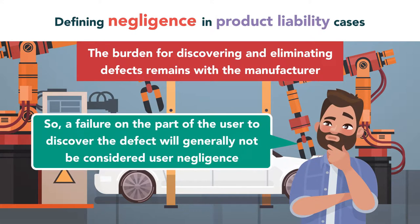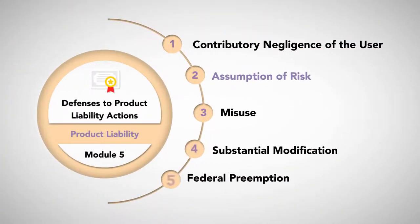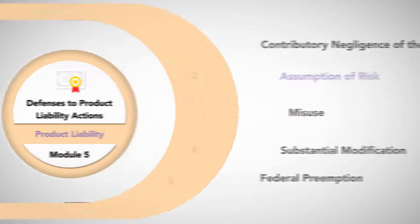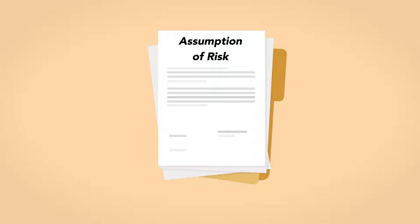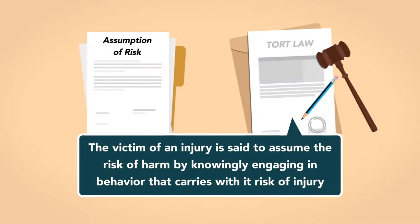Still, even when a plaintiff acts carelessly, the burden for discovering and eliminating defects remains with the manufacturer. So, a failure on the part of the user to discover the defect will generally not be considered user negligence. Assumption of Risk: a similar defense against products liability claims comes from the doctrine of assumption of the risk. In tort law, the victim of an injury is said to assume the risk of harm by knowingly engaging in behavior that carries with it risk of injury.